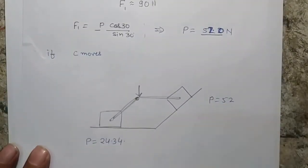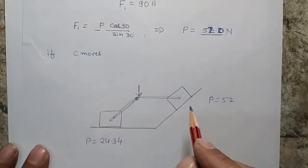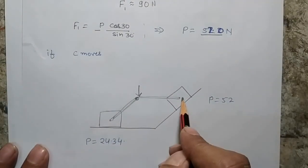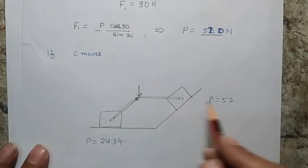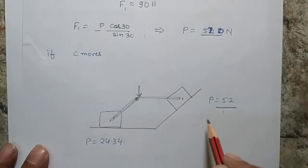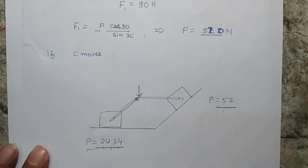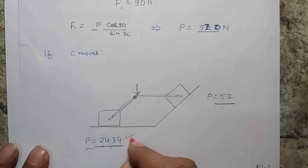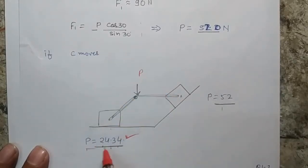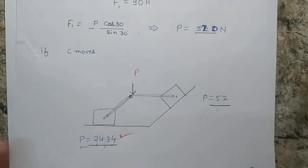So now we can conclude: if the equilibrium breaks at block C's side, P would need to be 52 N. If the equilibrium breaks at block A's side, P would be 24.34 N. Since 24.34 N is smaller, that is the correct answer — when P reaches 24.34 N, block A will move first and the equilibrium will be disturbed. Thank you.